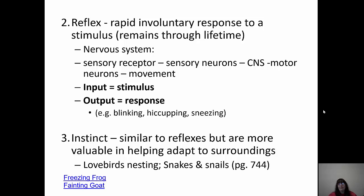Instincts are similar to reflexes but are more valuable in helping animals adapt to their surroundings — lovebirds nesting or snakes are examples. Please watch the two videos: one is a freezing frog, which has something similar to antifreeze in its circulatory system so it freezes up when cold and stays that way until it warms up. The other is fainting goats — the goats faint if startled, which is quite amusing.